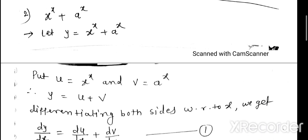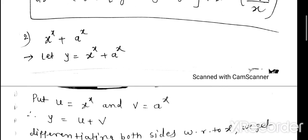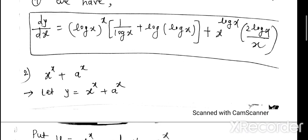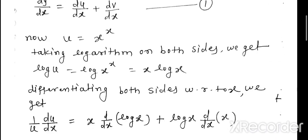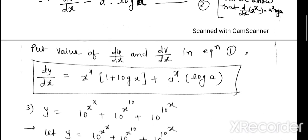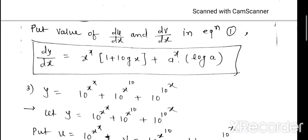The second part, x^x + a^x, you can try as homework. It is easier because the derivative of a^x is directly known as a^x · log a. The final answer is x^x·(1 + log x) + a^x·log a.